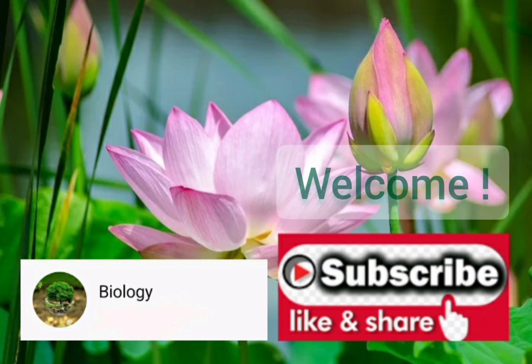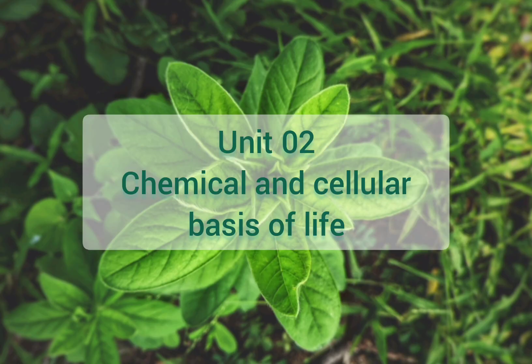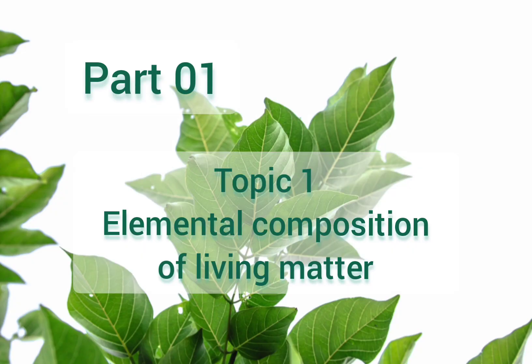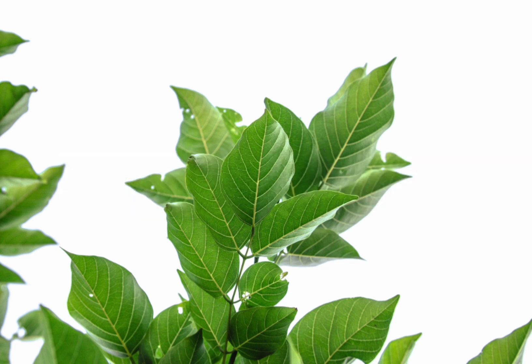Welcome to this YouTube channel. In this series we will discuss about the parts of the second unit called chemical and cellular basis of life. Unit 2, chemical and cellular basis of life, part one. Topic one: elemental composition of living matter. There are about 92 elements that naturally occur in Earth's crust, of which about 20 to 25 elements are essential to continue healthy life and reproduction. About 25 elements are essential for humans and about 17 for plants.